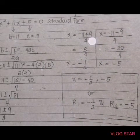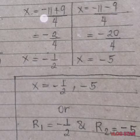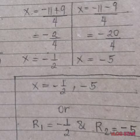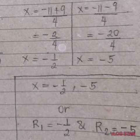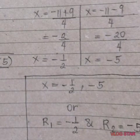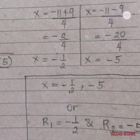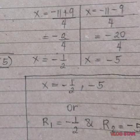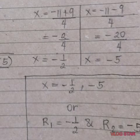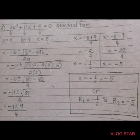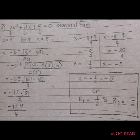Now separate the two: positive 9 and negative 9. Negative 11 plus 9 over 4 is negative 2 over 4. Simplifying the fraction, it is negative 1 half. On the other side, negative 11 minus 9 is negative 20, because like signs add; negative 20 over 4 is negative 5. Therefore, the values of x are negative 1 half and negative 5, or the roots of the given quadratic equation are r₁ equals negative 1 half and r₂ equals negative 5. The two roots can be exchanged.